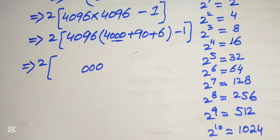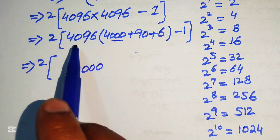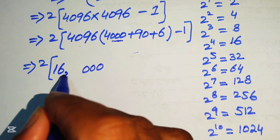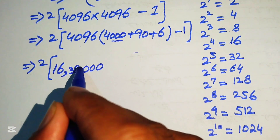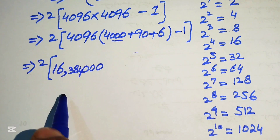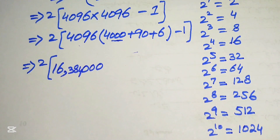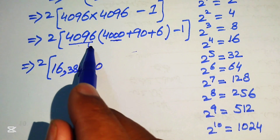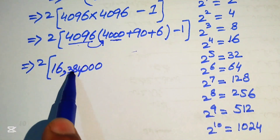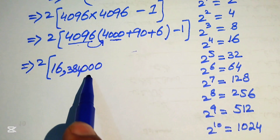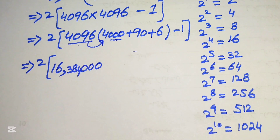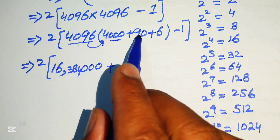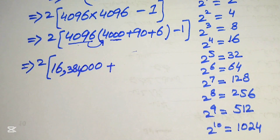When you multiply 4096 by 4, you get 16,384, and with the three zeros attached that gives 16,384,000.